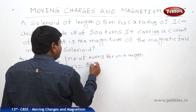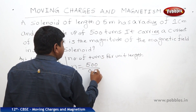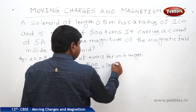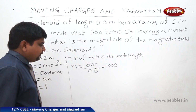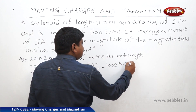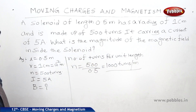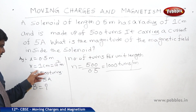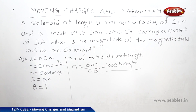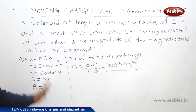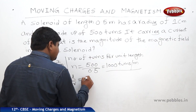N is equal to 500 divided by 0.5, which gives 1000. So N equals 1000 turns per meter. L is 0.5 meters, R is 10 to the power of minus 2 meters. Therefore L divided by R gives approximately 50, so we can use the lengthy solenoid formula since L/R equals 50.